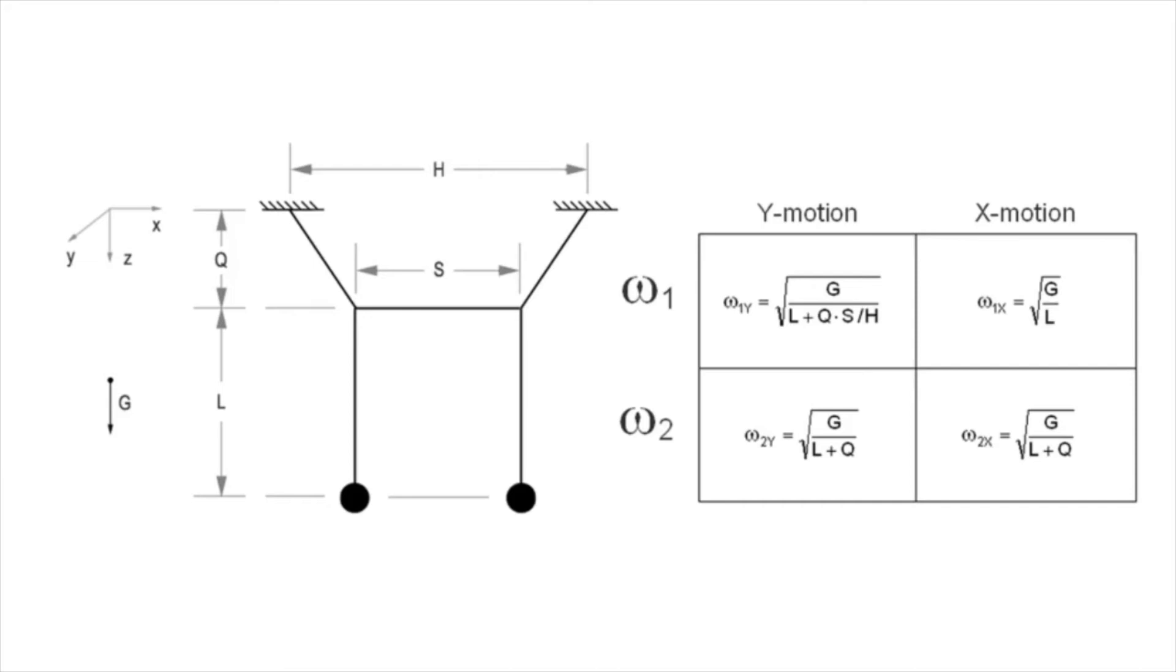Here we can see that the omega-1 and the omega-2 for y-motion and for x-motion are very simple functions of the pendulum's dimensions and the local gravitational constant. Note that the omega-2 for both y-motion and x-motion is the same. They are both the natural frequency of a simple pendulum of length l plus q.